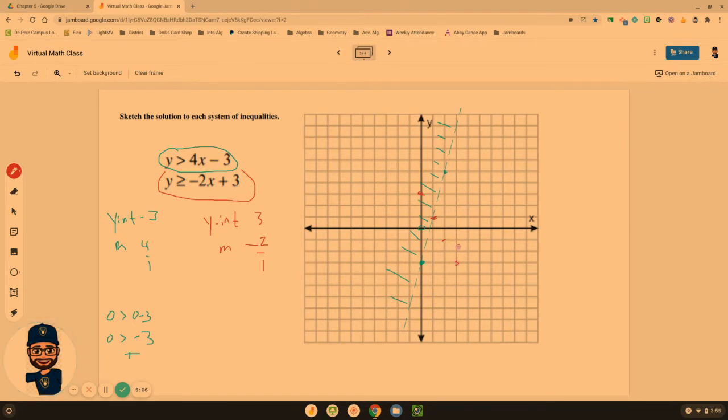What type of line would we need to use in this red, this second inequality? It does have the equal to bar, so this one would indeed need to be a solid line. So we can leave that line as solid. And then let's test a point.